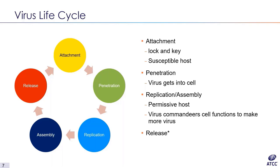When propagating a virus, it is very important to understand its life cycle. The basic life cycle revolves around the host cell and is broken down into five steps: attachment, penetration, replication, assembly, and release. During attachment, a virus binds to a susceptible host in a lock-and-key relationship where viral surface proteins act as a key and the cell surface receptor acts as the lock. If a cell does not have the correct receptor, the virus will not attach and the cell is considered not susceptible.